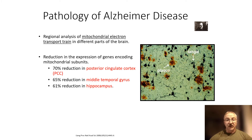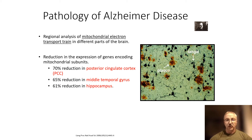We can look further in at mitochondrial electron transport chain levels and show that these are reduced early in Alzheimer's disease in the posterior cingulate gyrus, the middle temporal lobe gyrus, and in the hippocampus.